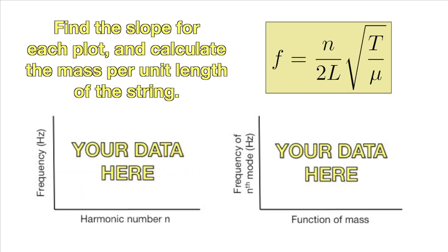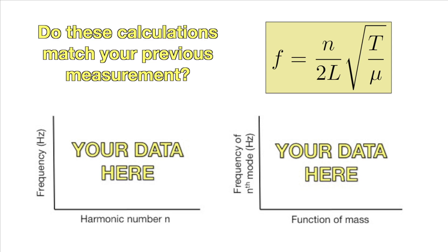Once you have straight lines for both plots, find the slopes and use these slopes to find the mass per unit length of the string. Does this calculation match your earlier measurement?